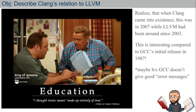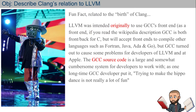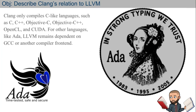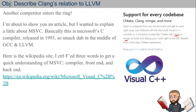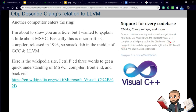Clang only compiles C-like languages. For other languages like Ada, LLVM remains dependent on GCC. Not much is known about Ada except that it is popular in the weapons-making arena — if you're coding weapons for the government, that's the language you might know.